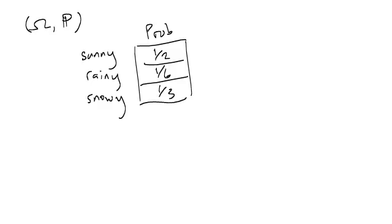For the code that you just saw, you started with this probability space given by sunny, rainy, snowy with probabilities half, one-sixth, one-third.